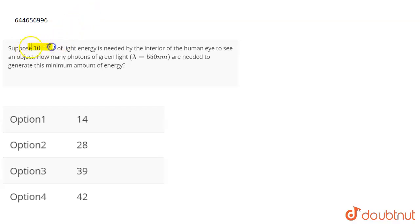The question is: suppose 10 power minus 17 joules of light energy is needed by the interior of a human eye to see an object. How many photons of green light with wavelength 515 nanometer are needed to generate this minimum amount of energy?